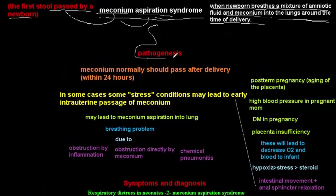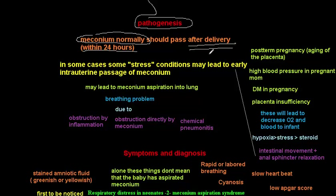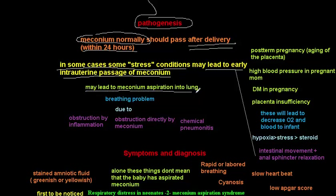The meconium normally passes within 24 hours after delivery. But in some cases, stress conditions may lead to early intrauterine passage of meconium, which may then lead to meconium aspiration into the lung.